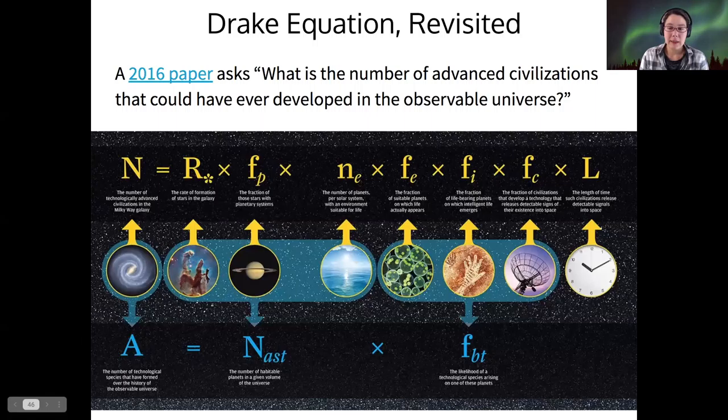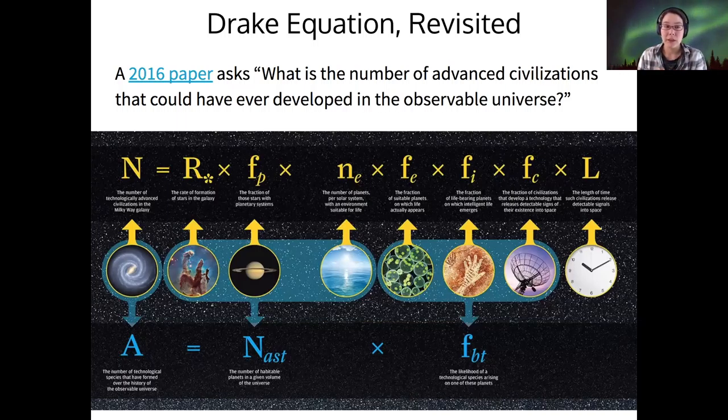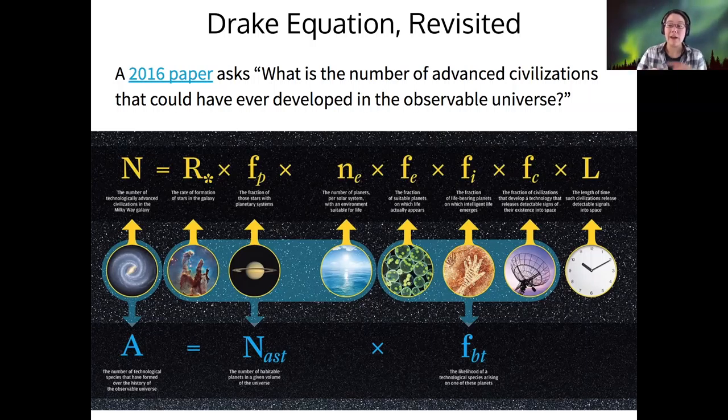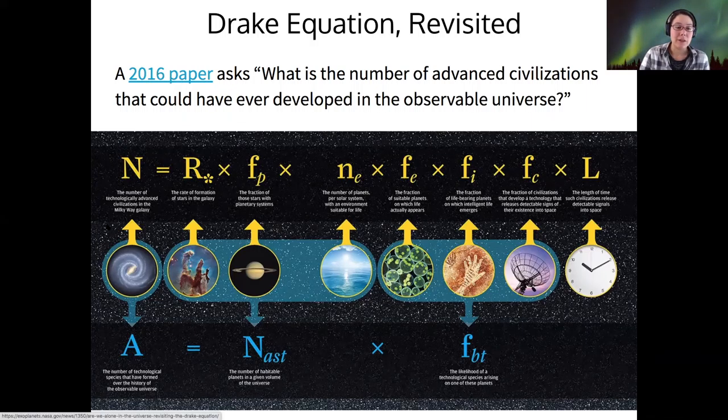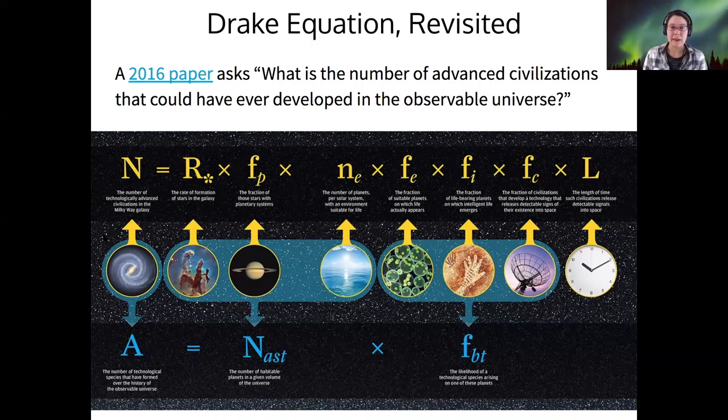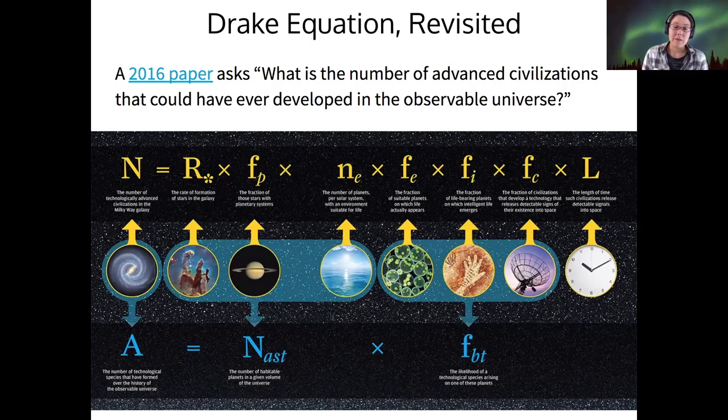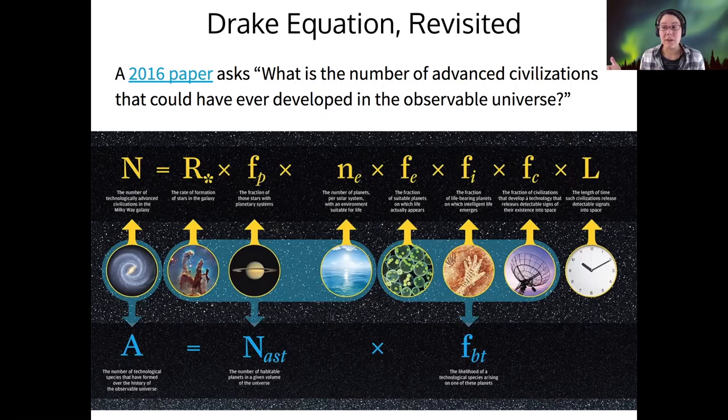All right. In the modern day, now that we have exoplanet research that's very active, people have recast the Drake equation to asking, what is the number of advanced civilizations that could have ever developed anywhere in the observable universe? And so you can read this paper of theirs in 2016, if you're curious to that. And basically they find it relatively optimistic that there could be lots of advanced civilizations that could have developed, but space is big, time is long, so we haven't heard from them still.